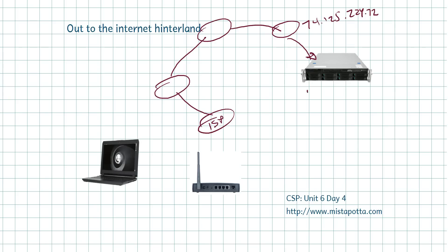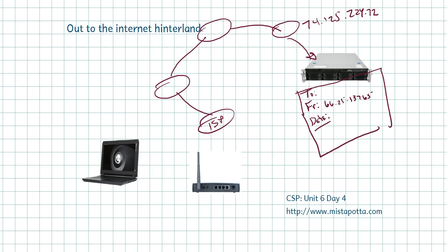Google receives my request. It receives this packet that says to this IP address and from me — 66.25.137.65. So Google gets this information along with some data: please send a webpage — whatever my request is for a webpage on Google's server.